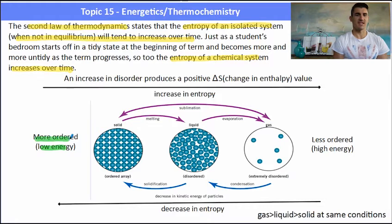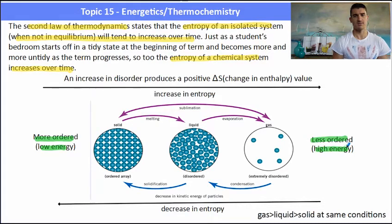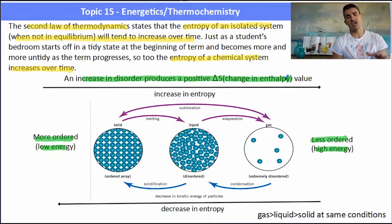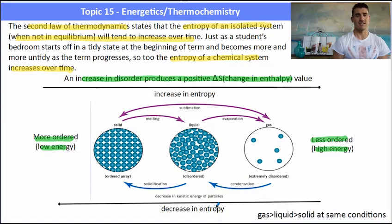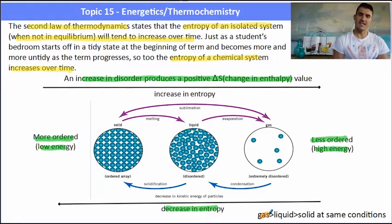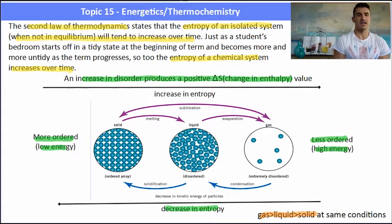In terms of solids, liquids, and gases: we have solids which are very ordered, low-energy systems. We have gases that are high-energy, less-ordered systems. Changing from one to the other can increase the energy, which is also an increase in entropy. So a gas has more entropy than a liquid, which has more entropy than a solid.